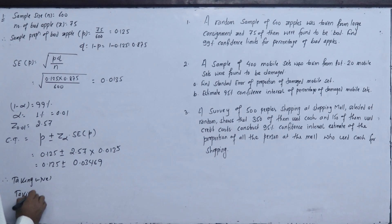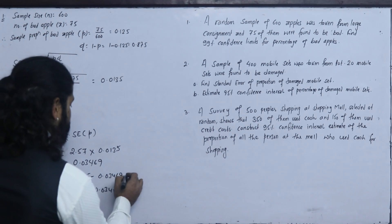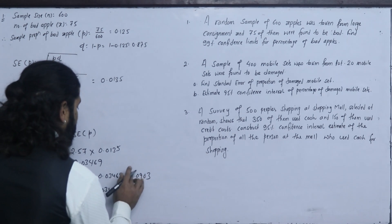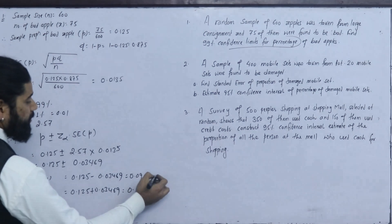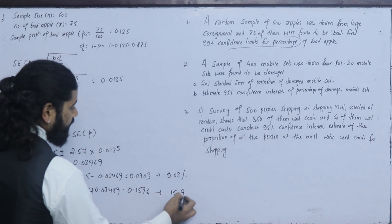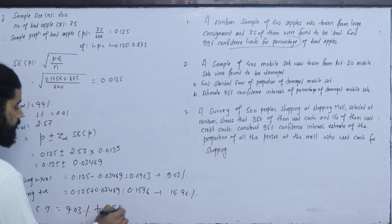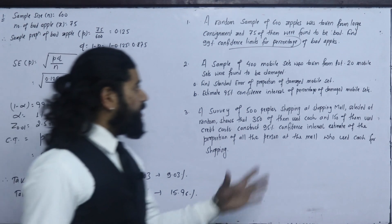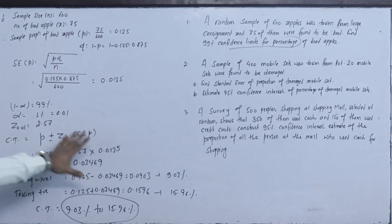We have to take positive and negative. This is 0.125 minus 0.03469 and 0.125 plus 0.03469, which gives 0.0903 and 0.1596. It's a percentage limit for bad apples, multiply by 100: 9.03% to 15.96%. The population proportion of bad apples is between these percentages.